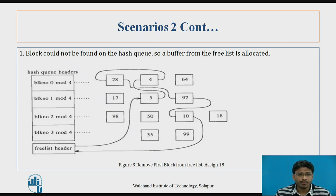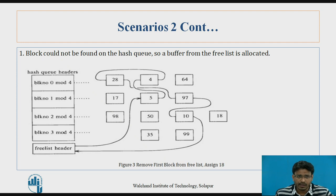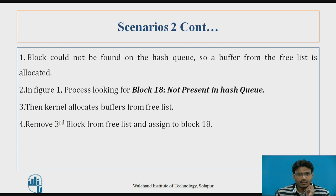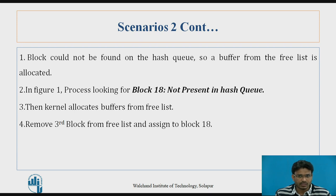We also need to update the free list because we removed buffer 3. That buffer is removed from the free list, reassigned as buffer 18, and the first buffer in the updated free list is now 5. To summarize scenario 2: the block was not found in the hash queue, so the kernel allocated a buffer from the free list by removing the 3rd block and assigning it to block 18.